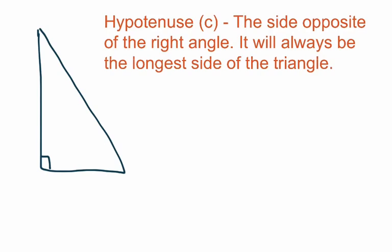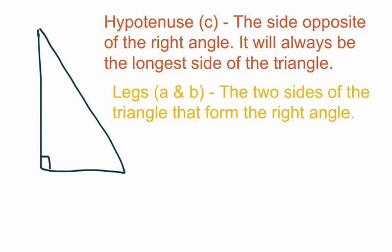So if you're using the Pythagorean Theorem and you're trying to find the hypotenuse, and you're finding that your side is not the longest, then something may have gone wrong. In addition to the hypotenuse, we also have the two other sides of the triangle. They are the sides that actually form the right angle, and those are called the legs. We use the letters A and B to represent the legs — those are the two sides of the triangle that form the right angle.